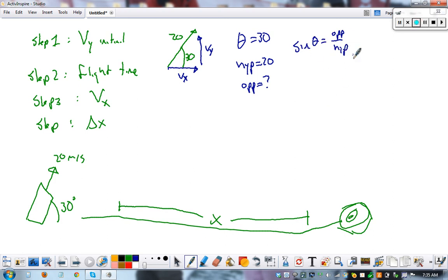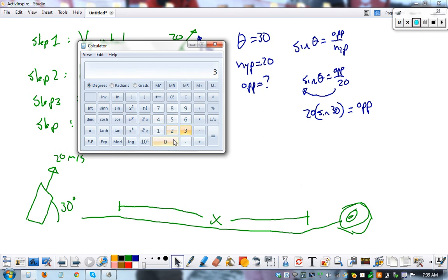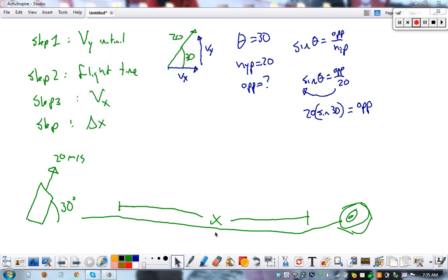And now let's solve for it. Sine 30 equals opposite over 20. Move this over here. 20 sine 30 equals what we want to know. And this is where you need to figure out your calculator. Let's see how mine works. 30, sine. Perfect. So some you have to push sine first. Some you have to push the 30 first. Times 20 equals 10. So I know the initial velocity upward is 10 meters per second. Check.